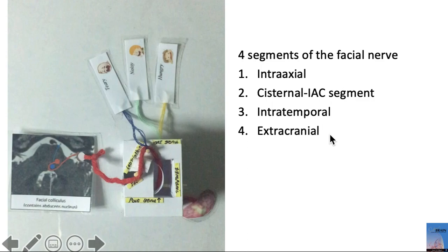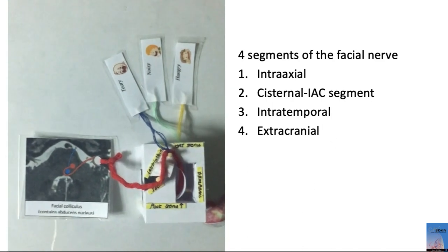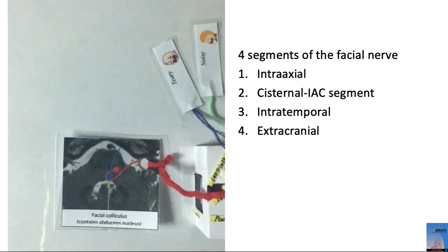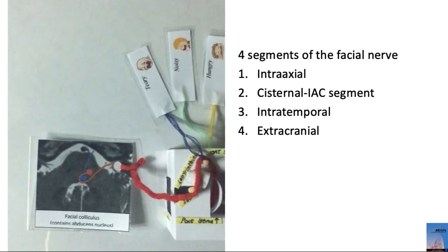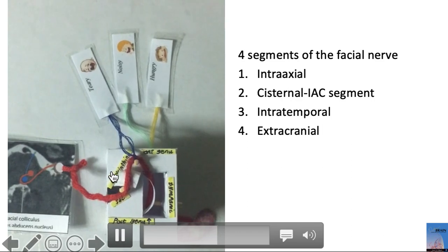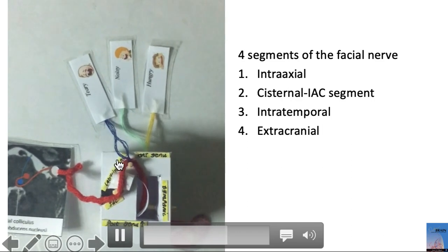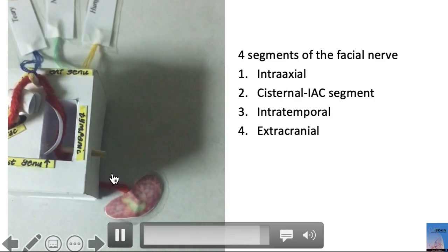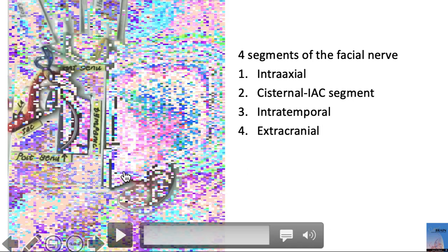The extracranial segment is the segment which branches within the parotid gland to supply the muscles of facial expression. In this model we see the intra-axial segment, the cisternal segment, the intratemporal, and the extracranial segment.